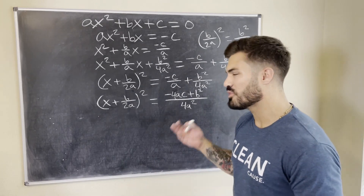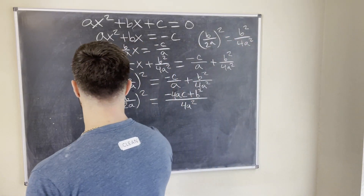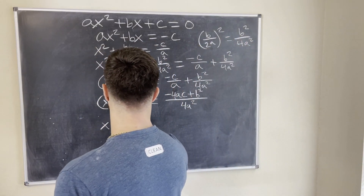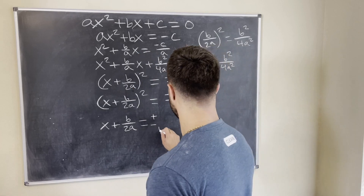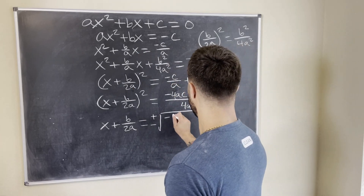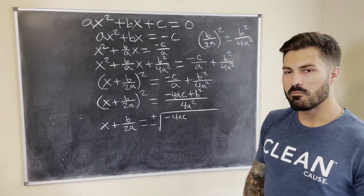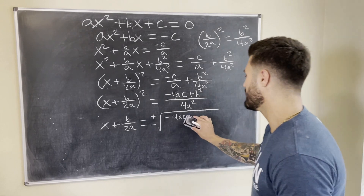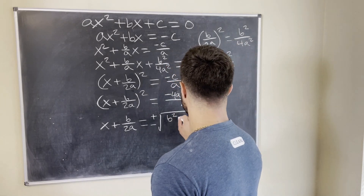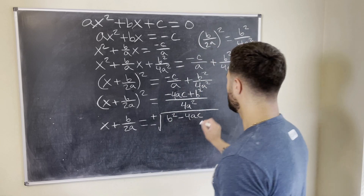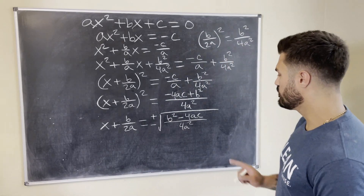Now we can square root both sides. Remember, when you square root both sides of an equation you need a ± sign. Taking the square root removes the square on the left, and on the right we get ± √((b² - 4ac) / 4a²). That expression b² - 4ac should sound familiar — that's what we call the discriminant. We're on the right track.